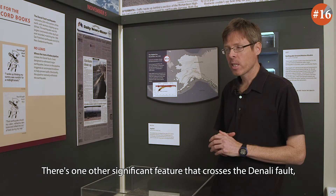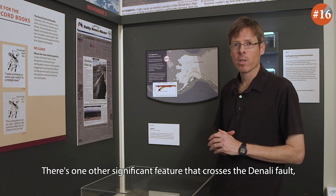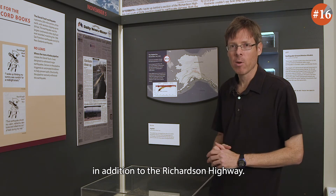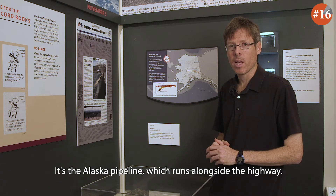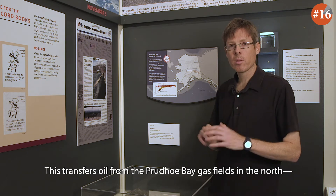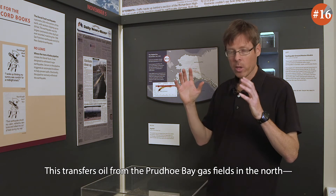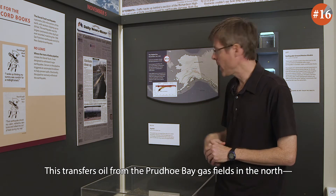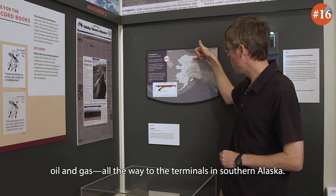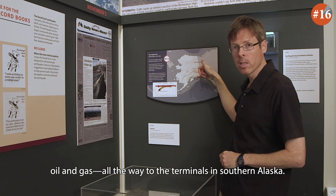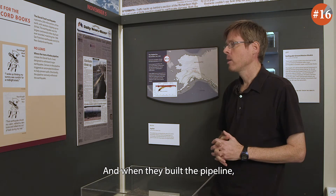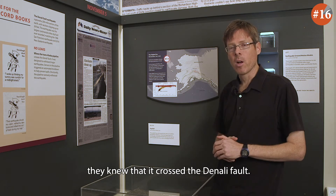There's one other significant feature that crosses the Denali Fault in addition to the Richardson Highway — it's the Alaska pipeline, which runs alongside the highway. This transfers oil from the Prudhoe Bay gas fields in the north, oil and gas all the way to the terminals in southern Alaska. And when they built the pipeline, they knew that it crossed the Denali Fault.